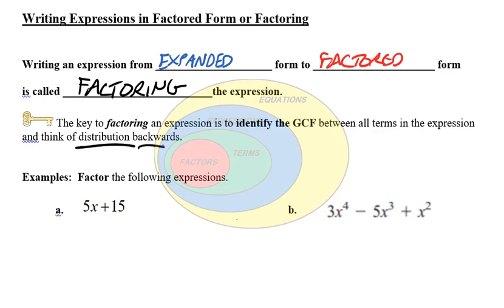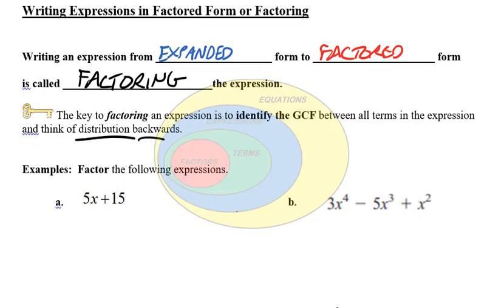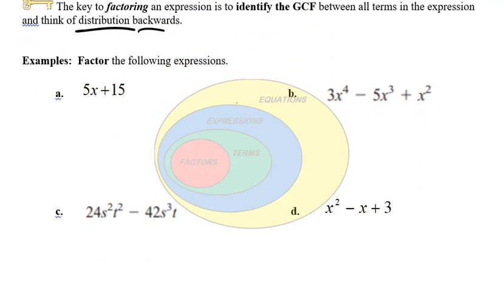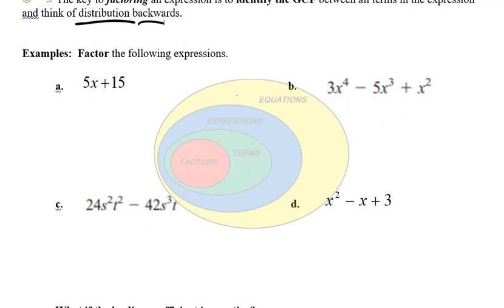This is kind of the key. We know when we distribute, we expand. So if we look at all these expressions, I'm just going to look at the first four here. All the expressions are expanded — there are two terms in the first expression, three terms in the second, two terms in C, and three terms in D. So these are all in expanded form. I want to write these in factored form, so I have to think about how distribution took common factors and distributed them to each term — we want to think of that backwards. The first thing we're going to do is look for the greatest common factor in all the terms.